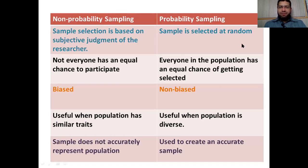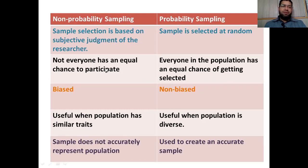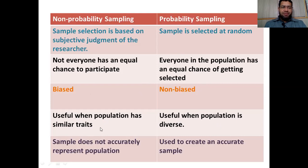Now let us compare non-probability sampling and probability sampling. In non-probability sampling, sample selection is based on subjective judgment of the researcher and there is bias, whereas in probability sampling, the sample is selected at random. In non-probability sampling, not every individual has a chance to participate, whereas in probability sampling every individual has equal chance of being selected. Non-probability sampling is biased while probability sampling is non-biased. Non-probability sampling is useful when the population has similar traits; probability sampling is useful when the population is diverse. In non-probability sampling, the sample does not accurately represent the population, whereas probability sampling is used to create an accurate sample.